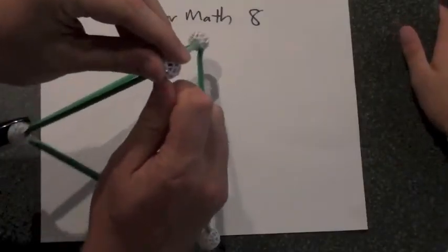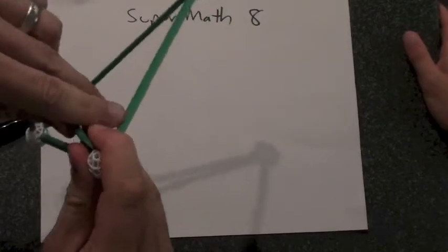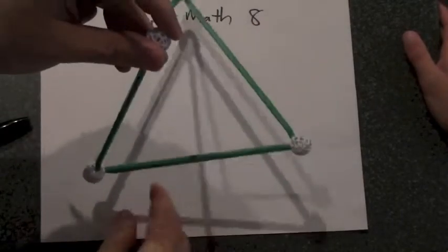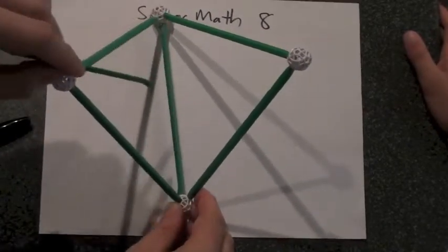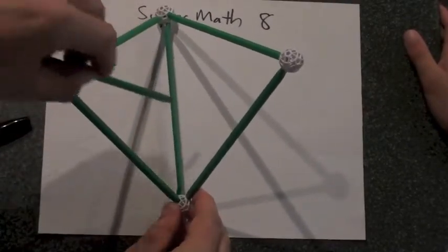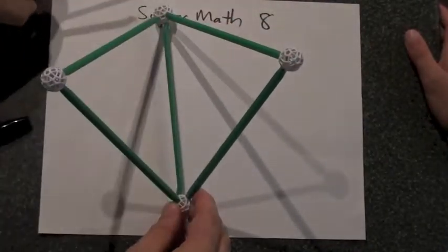If I take apart this tetrahedron just a little bit, what we're trying to measure is this angle here between these faces. It comes down there, like from the ball to the center of that side, and then up from the center of that side to the other ball.